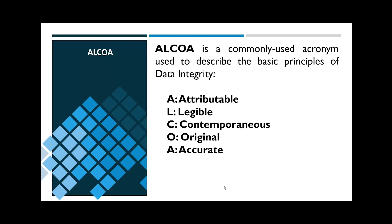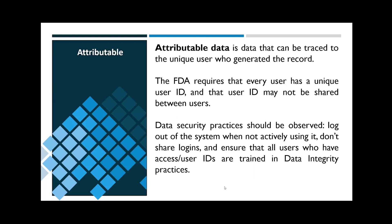So, data integrity — I covered what it is, so let's discuss its principles. ALCOA is the commonly used acronym that outlines the basics of data integrity. It stands for attributable, legible, contemporaneous, original, and accurate. Attributable data can be traced to the unique user who generated the record. That means that every user must have a unique user ID that cannot be shared amongst the team. This also necessitates data security practices. Users must log out of systems when not using them, log into their unique IDs to make changes or otherwise affect the process, and all users who have access to the system must be trained in data integrity practices.